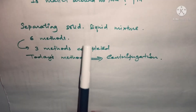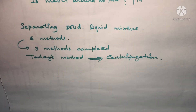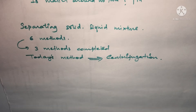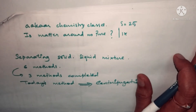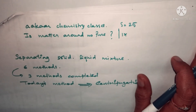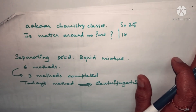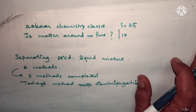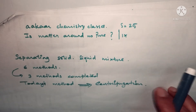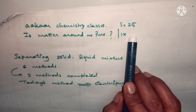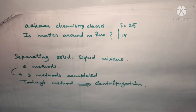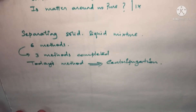We are going through the session on solid-liquid mixture separation. There are six methods in total and we have already completed three. Today we are going to discuss centrifugation. Welcome to our chemistry classes — we are going through a series of sessions for the chapter 'Is Matter Around Us Pure,' Class 9th, and this is session number 25.